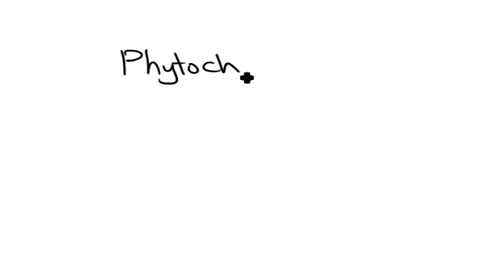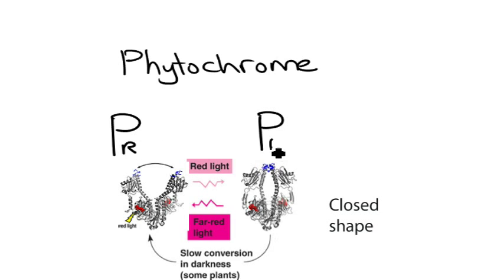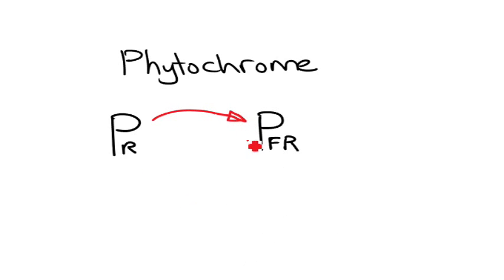phytochrome. Phytochrome is a weird chemical in that it's found in two forms. You've got the phytochrome red form and the phytochrome far red form. Now these are interchangeable. One breaks down to the other in the dark. We end up in the dark with a lot of phytochrome red.